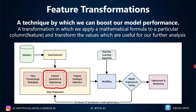How does feature transformation increase the performance of our machine learning algorithm? The answer is the distribution of the data. Data which is not normally distributed has a very large impact on linear models like linear regression and logistic regression. Feature transformation is a technique where we use mathematical formulas to normalize these distributions, and hence it boosts the performance of our machine learning algorithms.